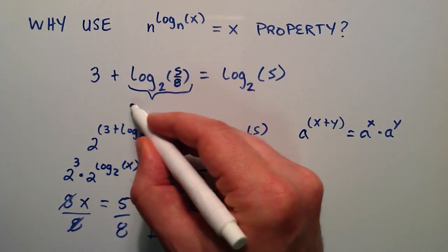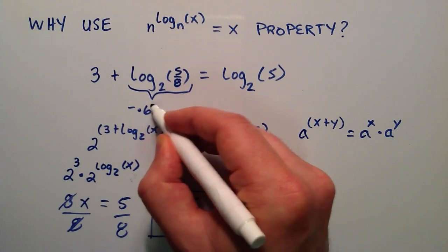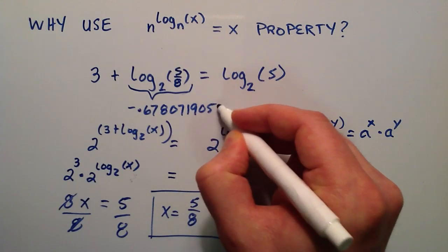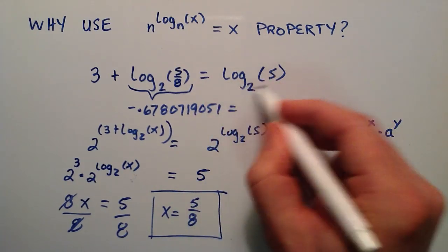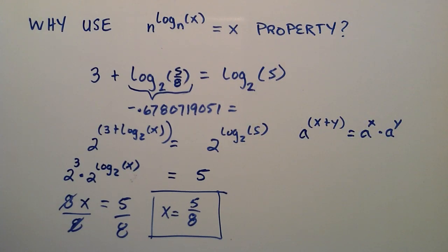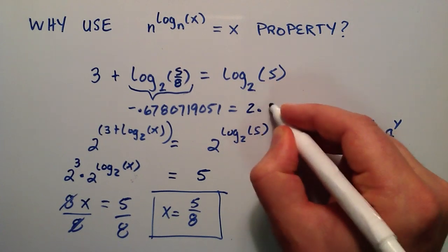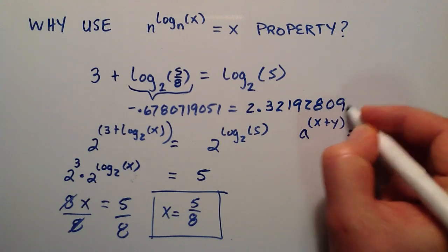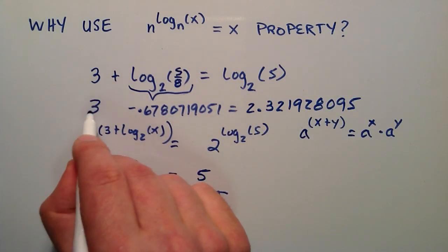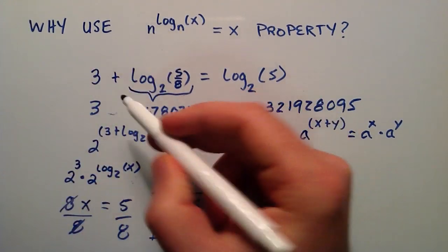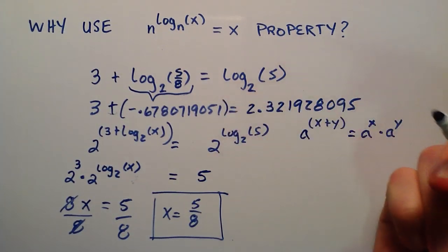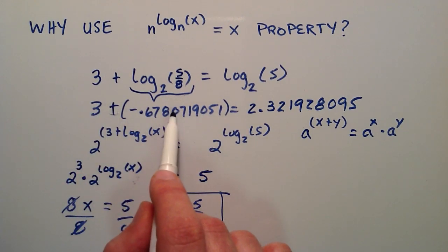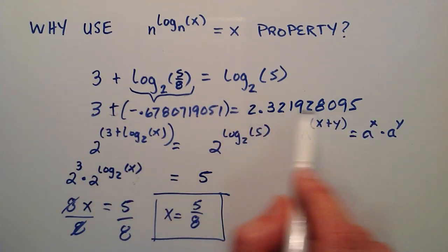I went ahead and did the change of base formula on my calculator, and I found that this part right here was -0.6780719051, and that's equal to, I plugged this on my calculator using the change of base formula, and I found that to be 2.321928095. And then we just add the 3 to this number, if you were to plug that into your calculator, you would find that the left-hand side is equal to the right-hand side.